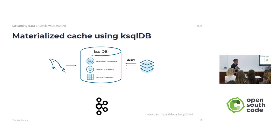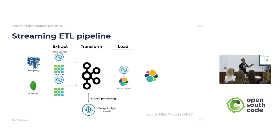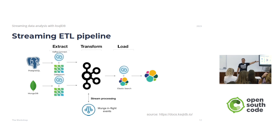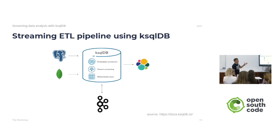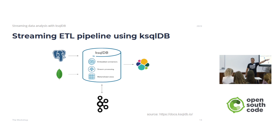Let's see another use case: a streaming ETL pipeline, where we have two different databases — Postgres and MongoDB. Using Kafka Connect with Debezium, we can track all the changes in the database and drop those changes into Kafka. With another application, we produce an output in Kafka, and using Kafka Connect we can sync that into Elasticsearch so the user can consume the information. Using ksqlDB, we could have both connectors defined in ksqlDB, do all the streaming processing — filtering, joining, aggregation — produce output in a topic, and sync to Elasticsearch.